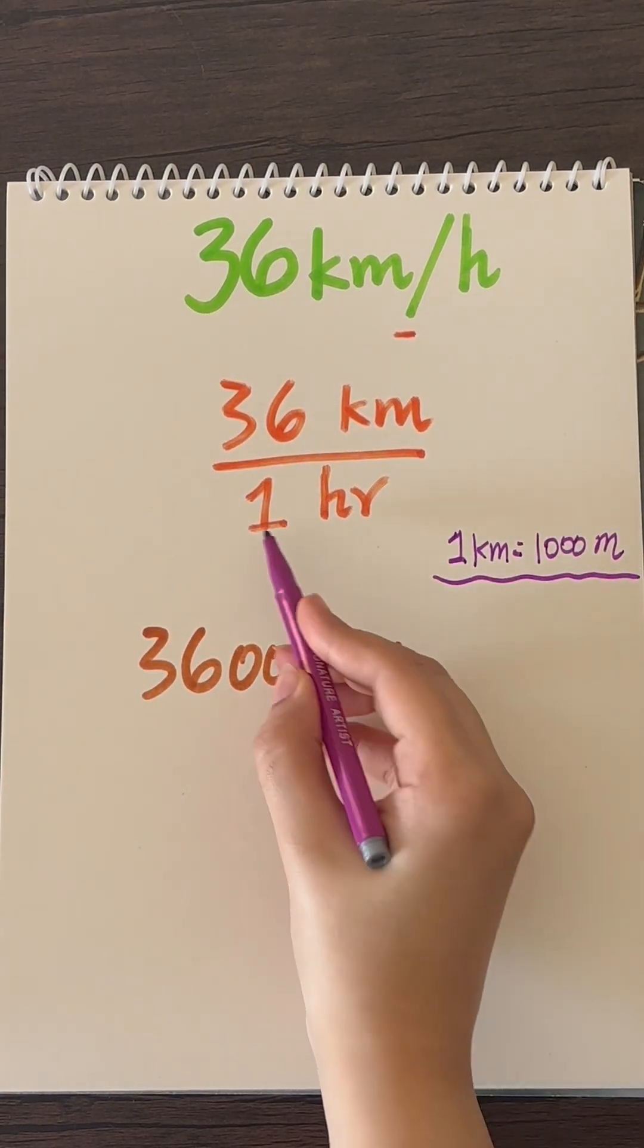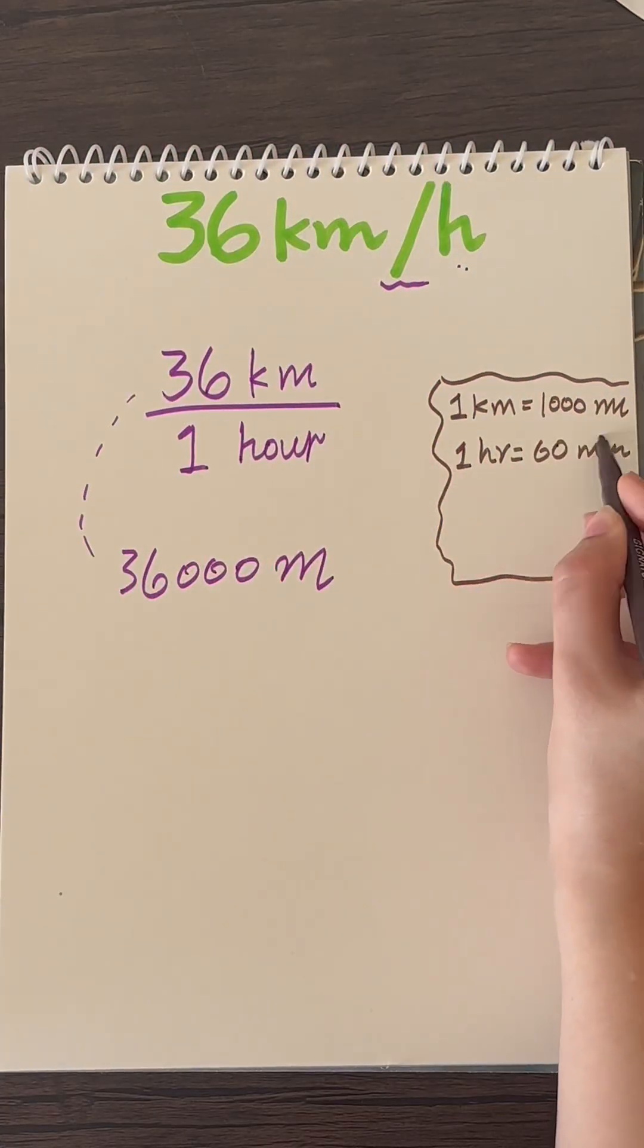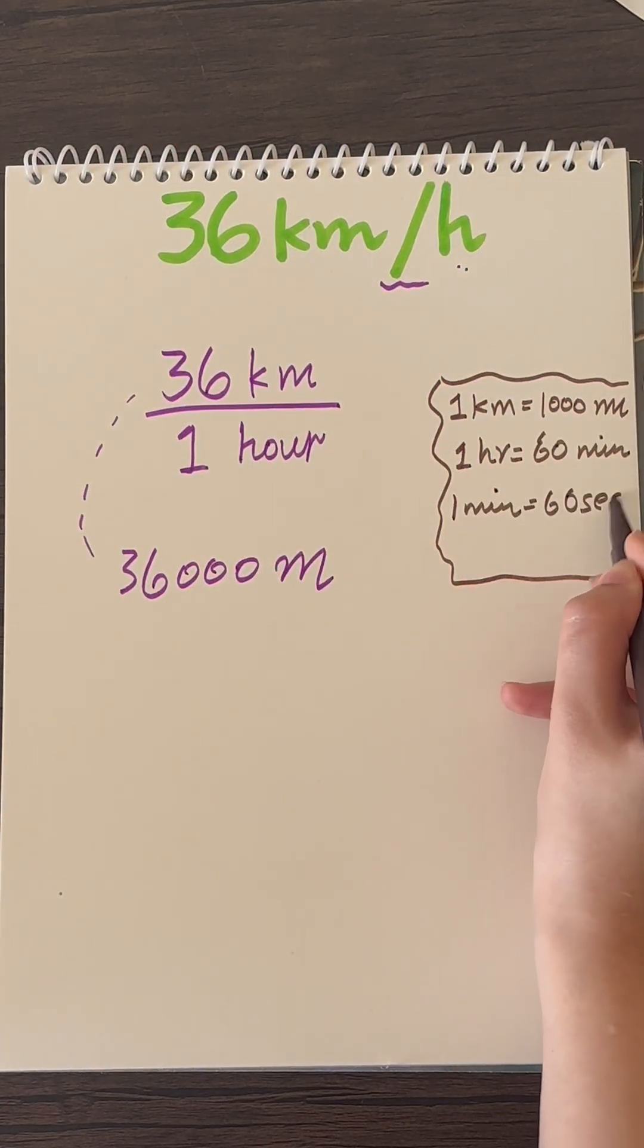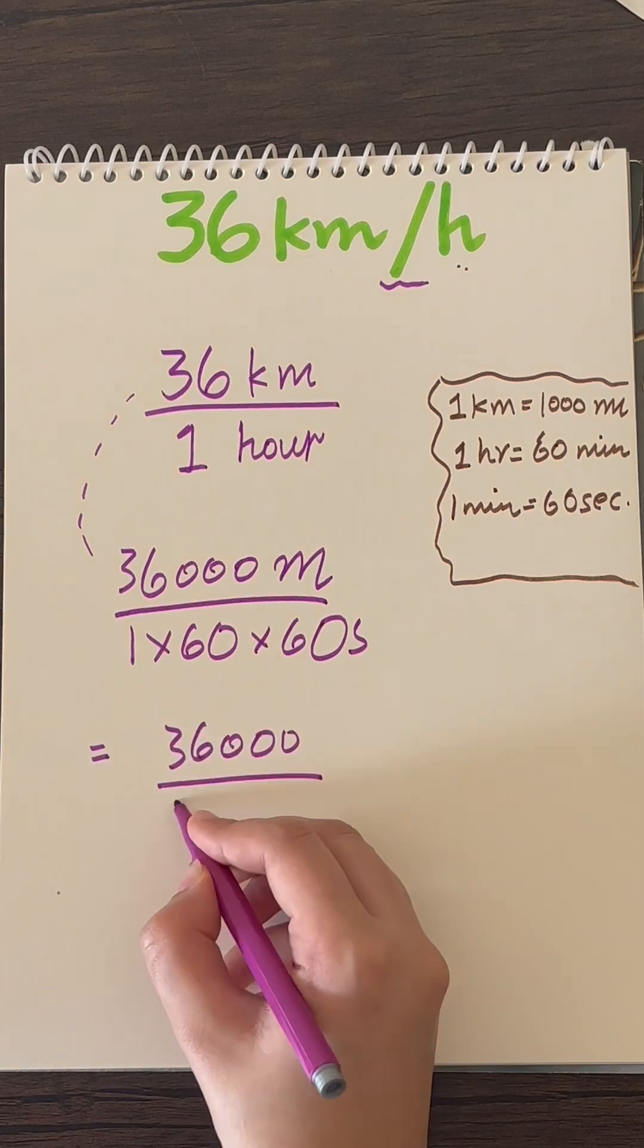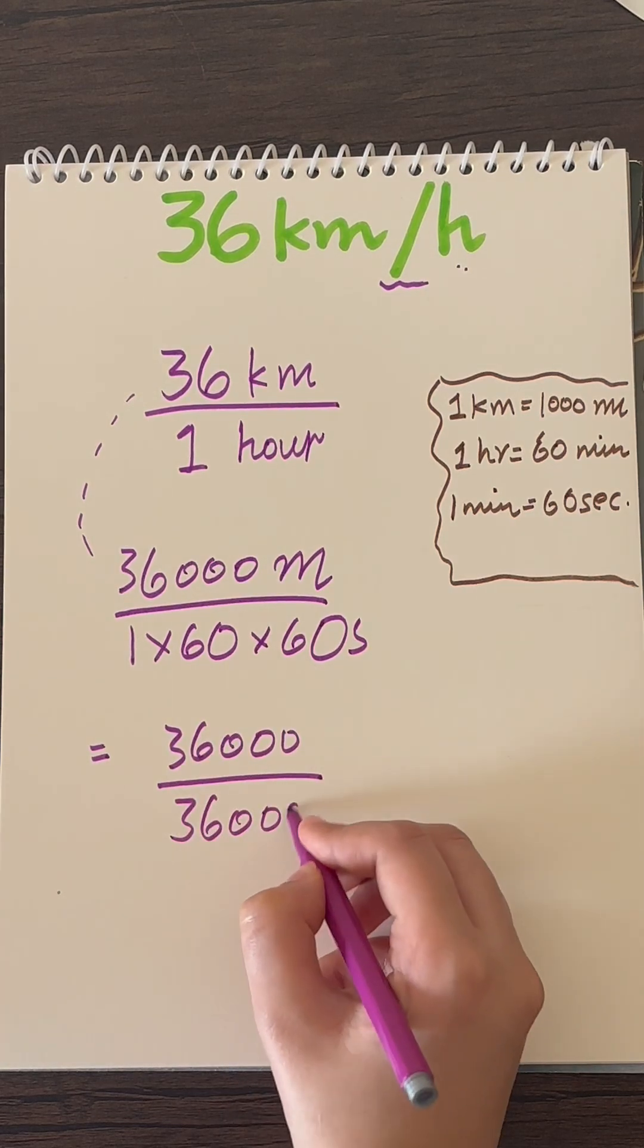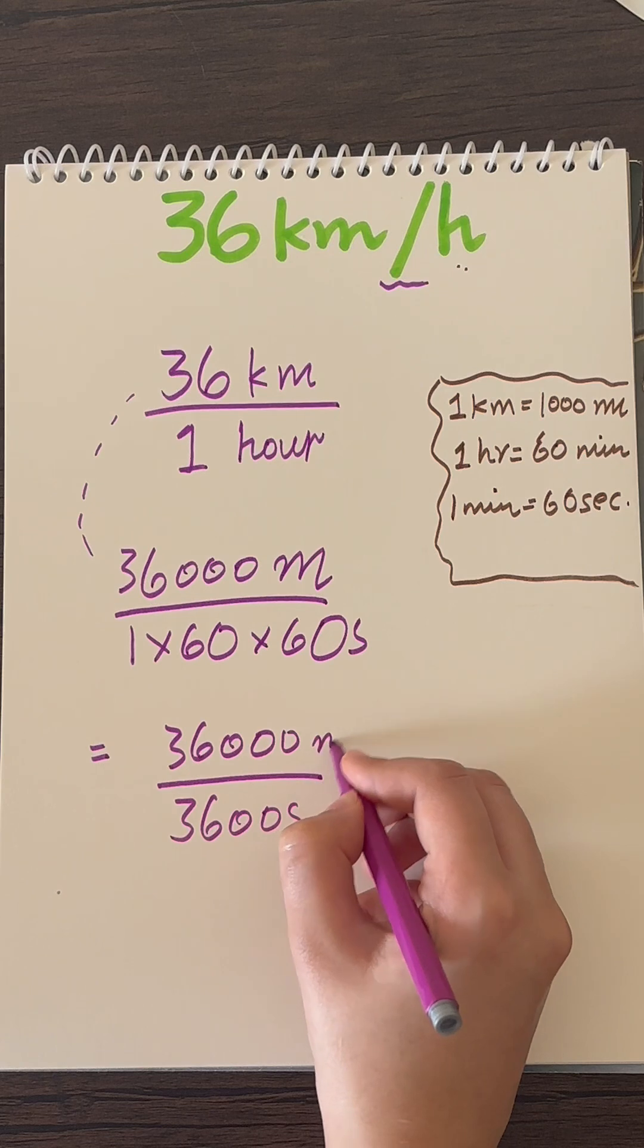Then how many seconds are there in one hour? One hour has 60 minutes, and one minute has 60 seconds. So 60 into 60 are 3,600. That means there are 3,600 seconds in one hour.